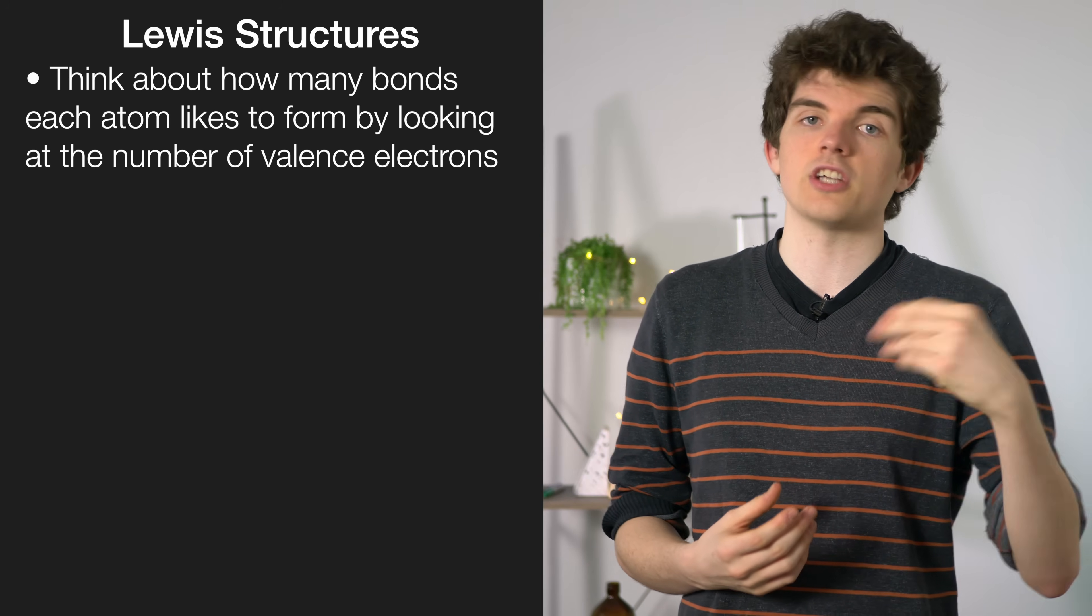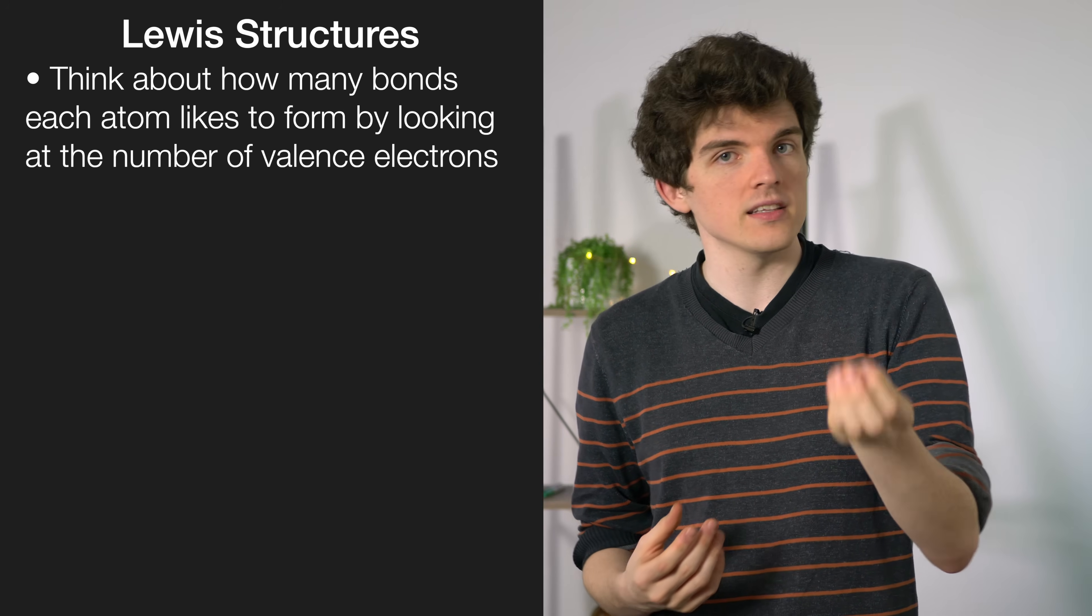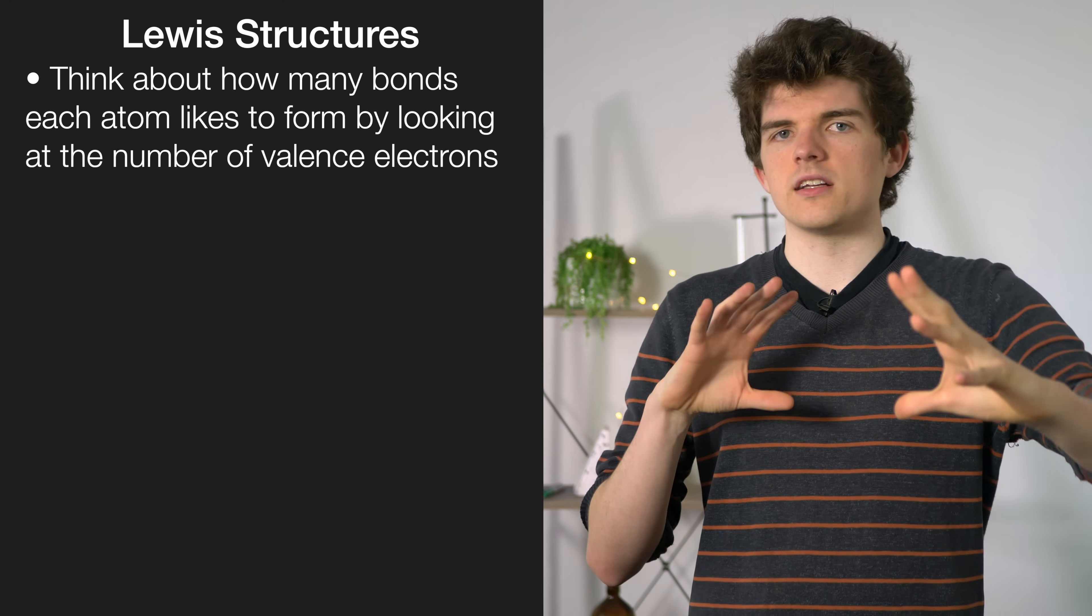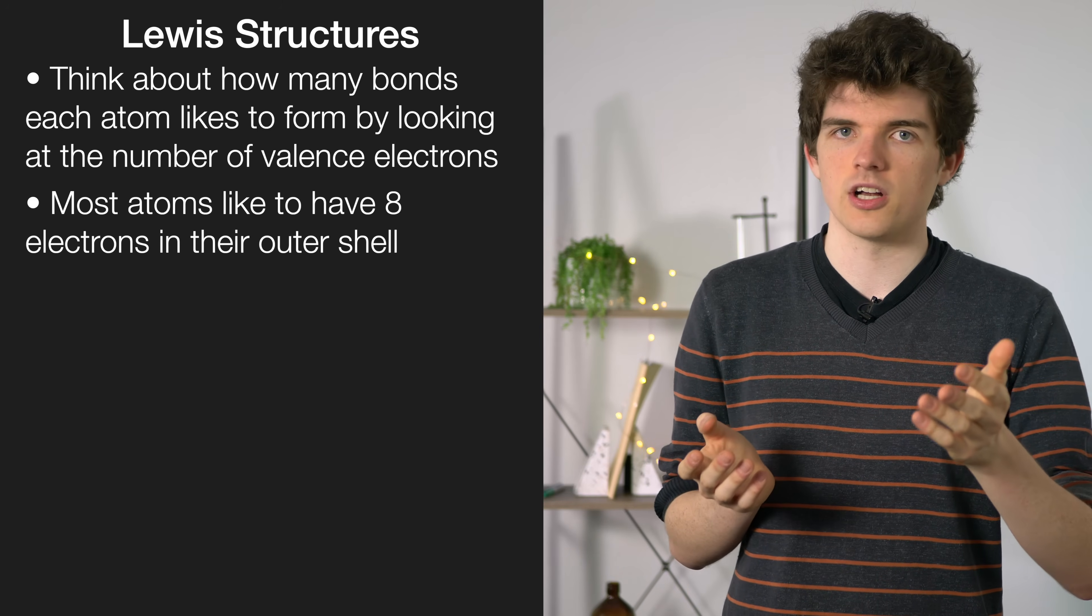Another question that is guaranteed to come up is Lewis structures. Here's a quick method that is probably different to the way you were taught. The way I like to think about it is thinking about the number of bonds that each element likes to form. We can get that from the number of valence electrons and the number of valence electrons that's missing, because we all know that most atoms like to have eight electrons in their outer shell.